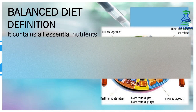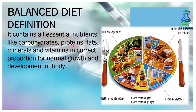In the previous lectures of this chapter, we studied all the nutrients. We saw that carbohydrates, proteins, fats, minerals and vitamins are very important for our body's functions. It is very important that all nutrients in our food are in the correct proportion so that our body's normal growth and development can take place. This means that in our diet, it is very important to add nutrients in the right amounts — that is what we call a balanced diet.